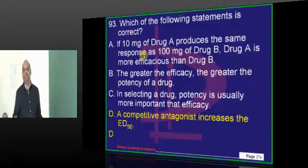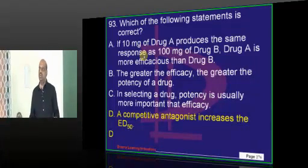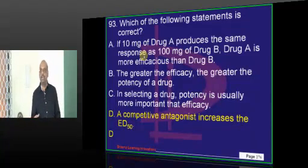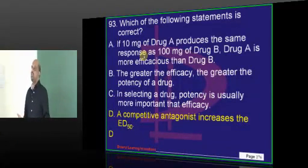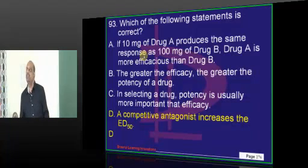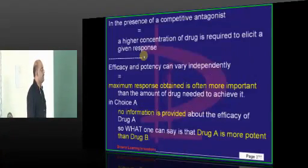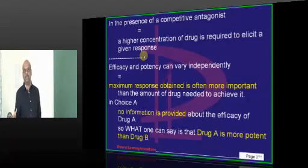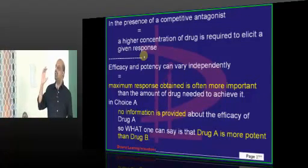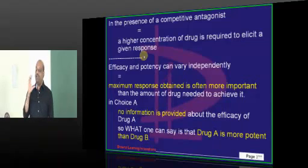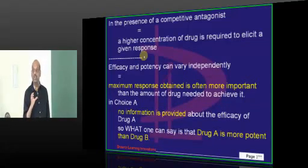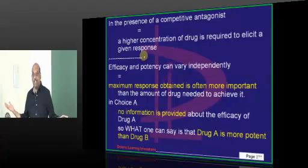Coming to ED50 — effective dose at which 50% of the efficacy is achieved. If you use a competitive antagonist, that dose at which 50% effectiveness is achieved needs to be increased. You must know the difference between efficacy and potency. Potency means even with little reading, you got the best rank — you are potent. Reading a lot of things means you are efficacious.